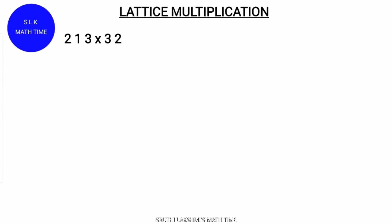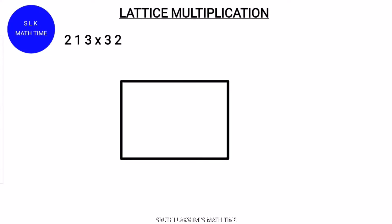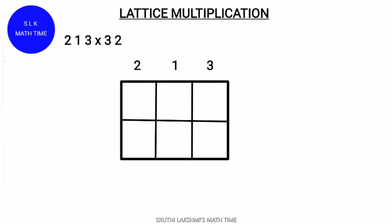In lattice multiplication, you need to know tables up to 1 to 9. Now, 213 is a 3-digit number and 32 is a 2-digit number. So we make 3 columns and 2 rows like this. This is 213 and this is 32. Now we put diagonal lines like this.